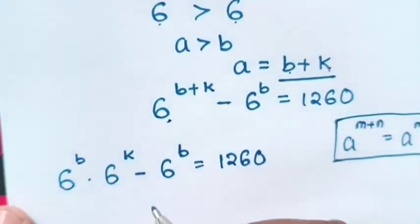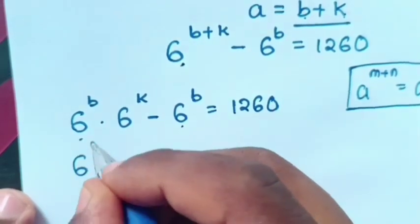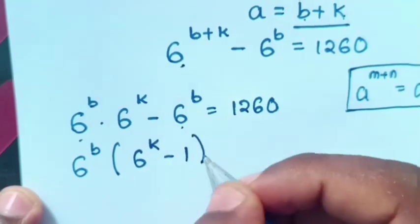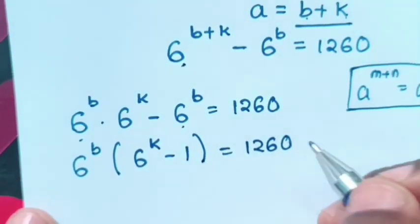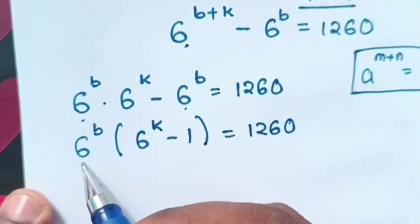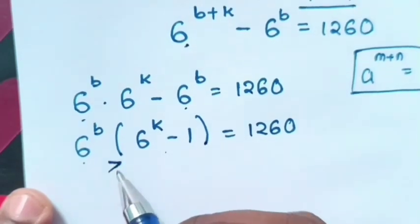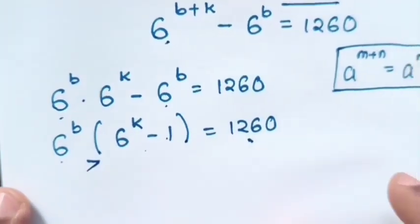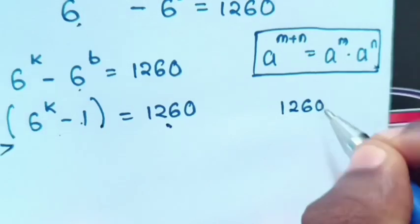Then, because 6 power b is common, we take out of bracket: bracket 6 power k minus 1 is equal to 1260. Now, we can see 6 power b is greater than 6 power k minus 1 by 1. Then, 1260 can be the product of two numbers with difference of 1.